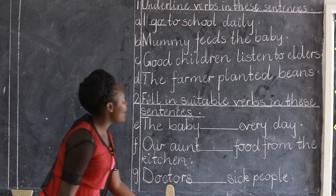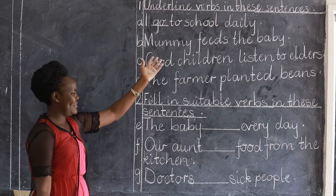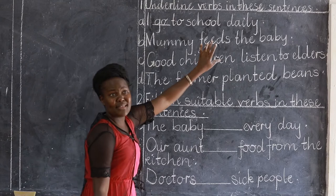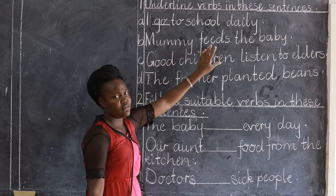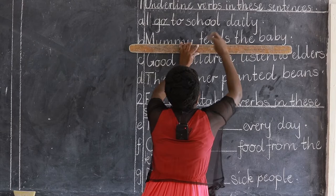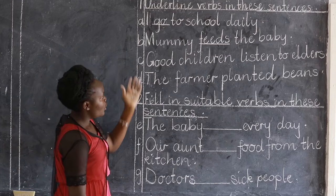Mommy feeds the baby. Which is the action word — the doing word? Can you 'mommy'? Definitely no. That one is a noun — a name of a thing. 'Feeds.' Can you feed someone or something? Yes, it's possible. So this is the action: feeds. Hope that's what you underlined too.